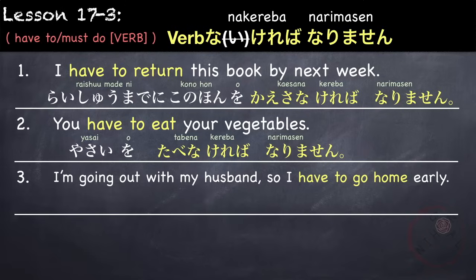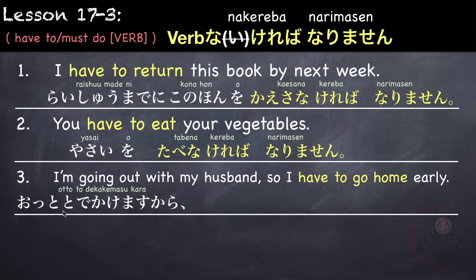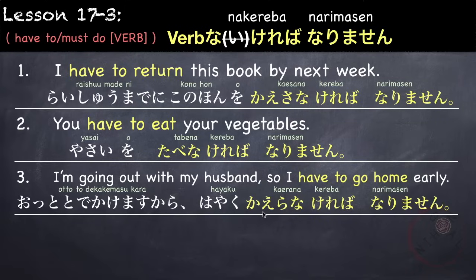'I'm going out with my husband, so I have to go home early.' Otto to dekakemasu kara, hayaku kaeranakkereba narimasen. Our verb is go home — kaerimasu — which becomes kairanai, remove i, add kereba narimasen: kairana kereba narimasen. Otto to dekakemasu kara hayaku kairana kereba narimasen.